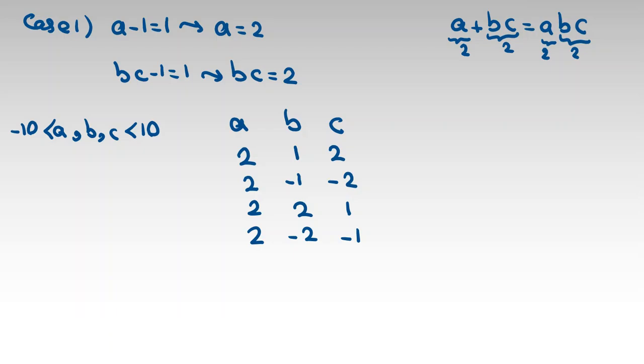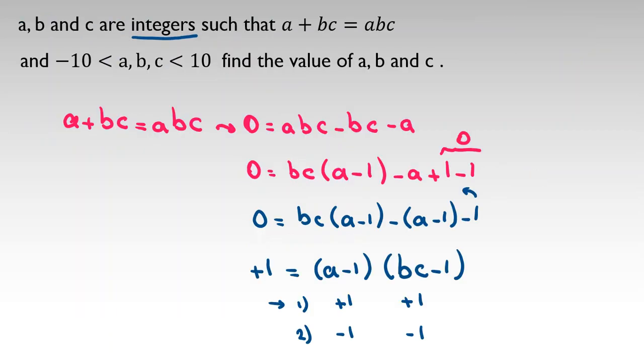I've written all of them. Let's consider Case 2: a - 1 = negative 1 and bc - 1 = negative 1.